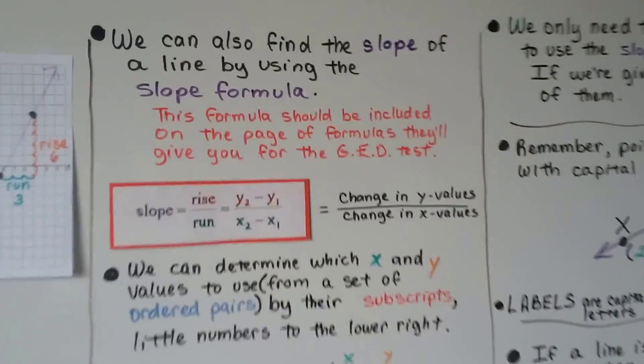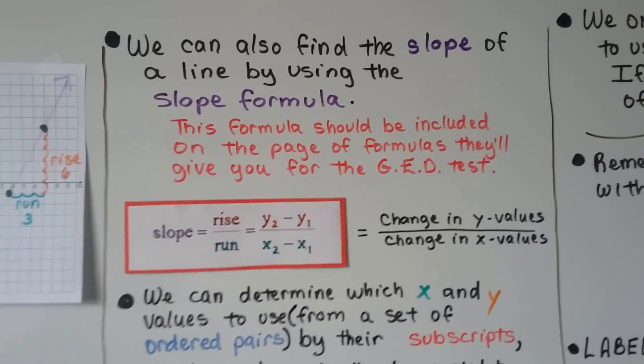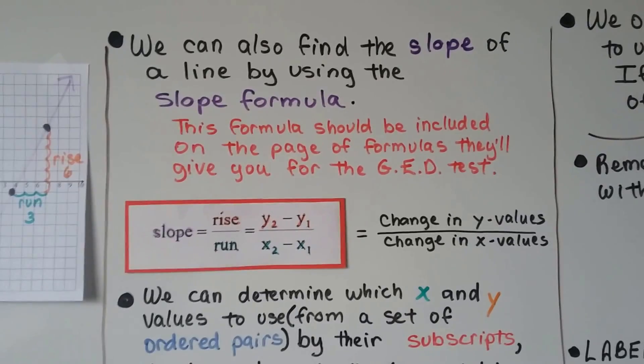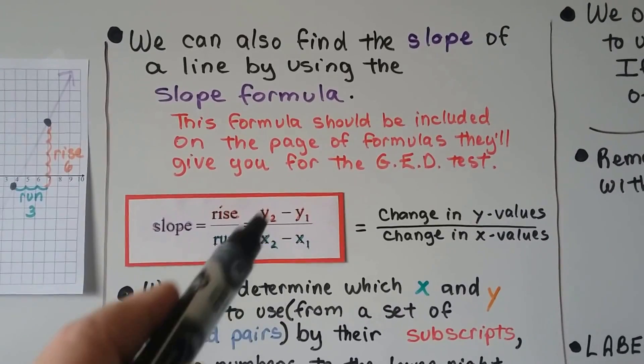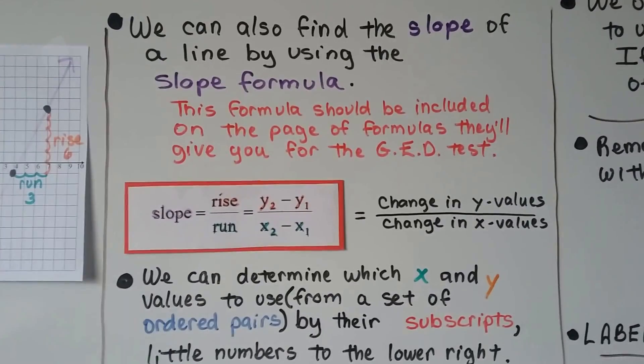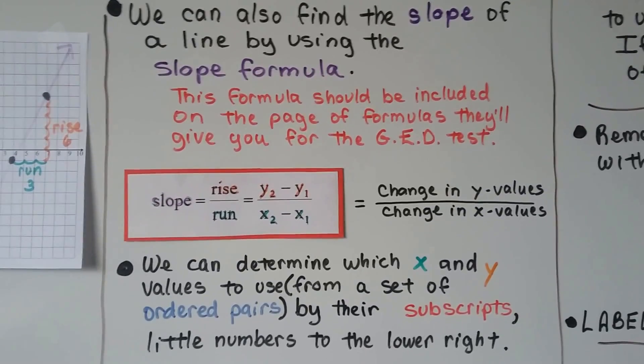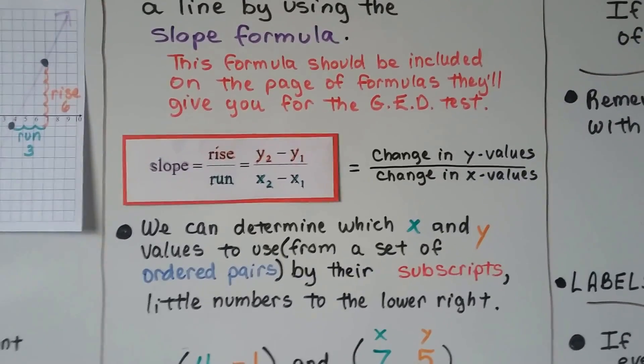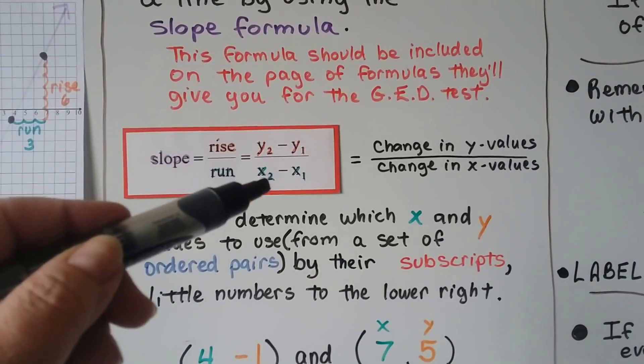Well, we can also find the slope of a line by using the slope formula, and this formula will be included on the page of formulas they'll give you for the GED test. So this is the formula. It's the change in y values divided by the change in x values, and we can determine which x and y values to use from a set of ordered pairs by their subscripts. Those are these little numbers right here.